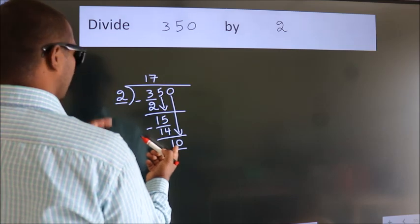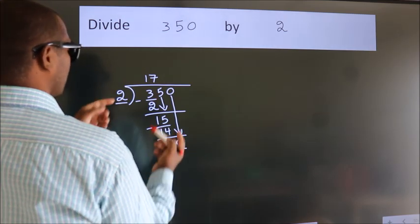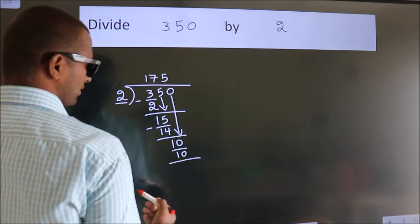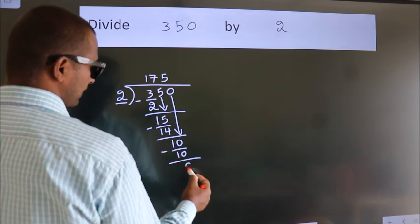When do we get 10? In 2 table, 2 5s, 10. Now we subtract. We get 0.